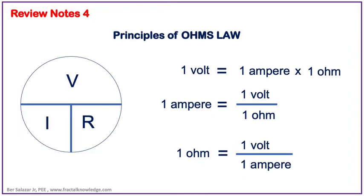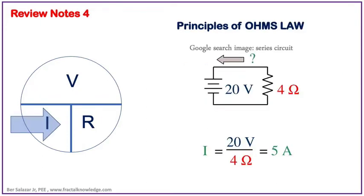Ohm's Law also gives you information about the value of each variable. To get one volt, you need one ampere and one ohm. To get one ampere, you need one volt divided by one ohm. And to get one ohm, you need one volt divided by one ampere.